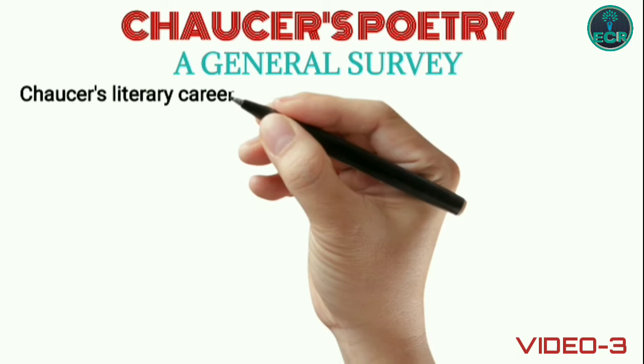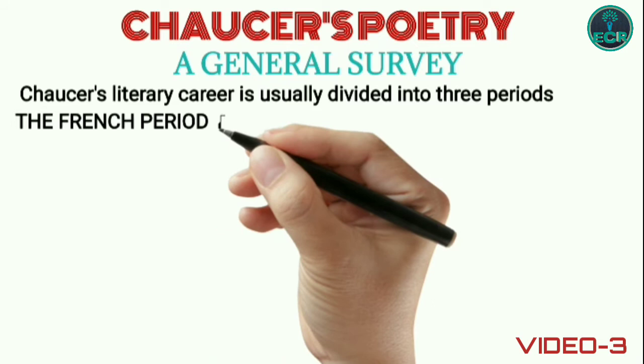Chaucer's literary career is usually divided into three periods: the French period, the Italian period, and the English period.